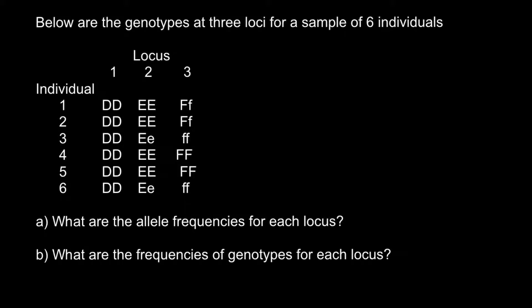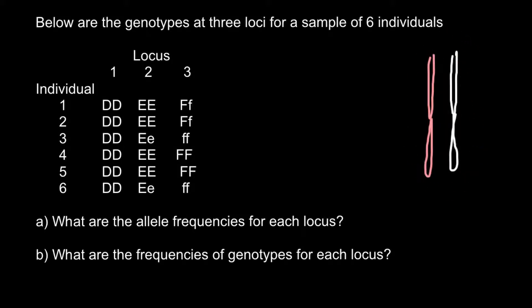Imagine that we have 23 pairs of chromosomes. Chromosomes go in pairs — one inherited from the mother's side, another from the father's side. So we have 23 pairs, a total of 46 chromosomes. All homologous chromosomes go in pairs. One color stands for the maternal chromosome, another for the paternal homologous chromosome.